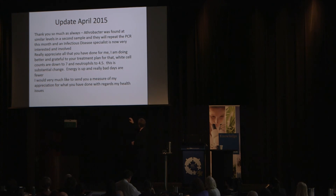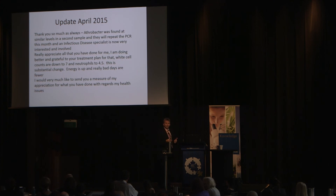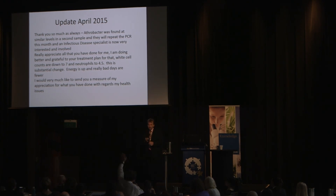He's better for what he's been doing. His white cells are down to 7, neutrophils down to 4.5 — demonstrating his body is for the first time in months starting to produce fewer white blood cells to defeat an infection, based on that simple intervention with an unknown pathogen but with an understanding of dysbiosis. Energy is up, really bad days are fewer. We're going to follow this guy — UCT are involved, we can get PCRs done regularly — and track whether we can get rid of that soil-based organism.